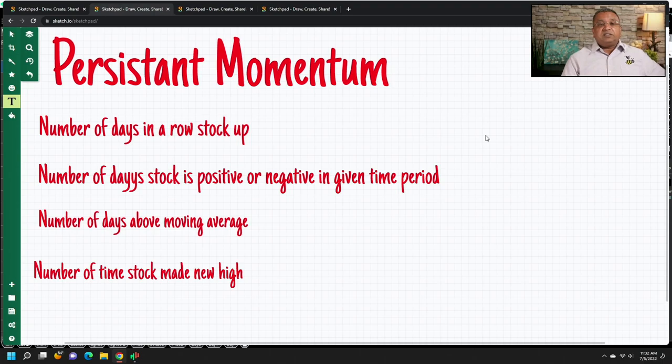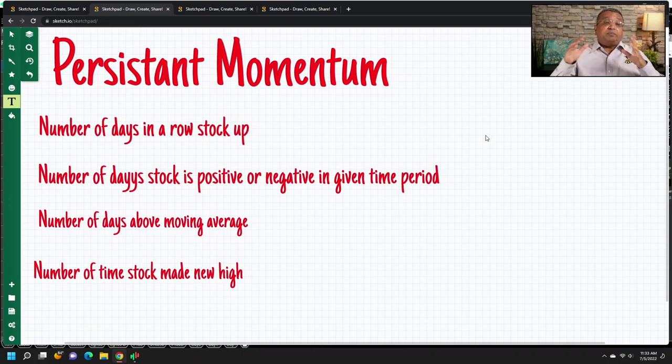Similarly, if a stock is continuously making new lows — say it makes 120 new lows in the last 200 days — that means it has persistent downtrending momentum. In order to create these kinds of momentum qualities to find these kinds of stocks, you can use a functionality in Telechart which allows you to find how persistent the move is, or write a scan to allow you to find them.